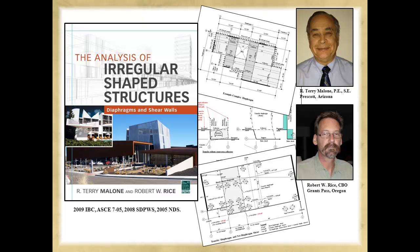Several decades ago, by and large, residential and commercial structures constructed were fairly straightforward, redundant structures exhibiting reasonable layouts of the lateral-resisting systems. These structures had a minimum number of vertical and horizontal offsets.